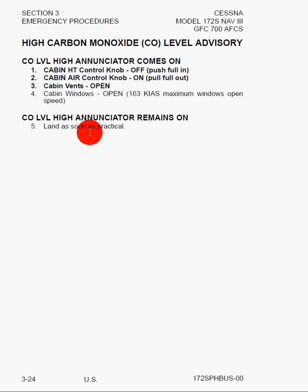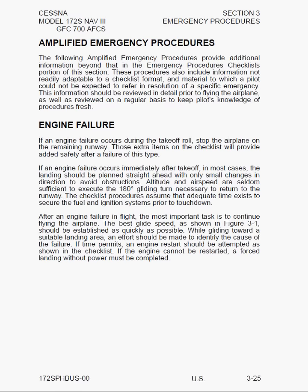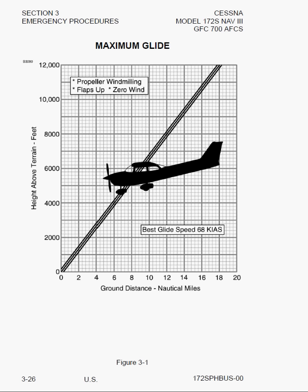Here we have high carbon monoxide levels and amplified emergency procedures for engine failure. Maximum glide speed is 68 knots indicated airspeed — though this is really a best guess at best glide speed. If you transition into flying gliders, you'll realize there isn't a single best glide speed but a whole range of speeds depending on conditions like winds, lift, and sink. This figure assumes best glide for a given weight in still air. Working out the numbers, from 12,000 feet you have about 18 miles, giving a glide ratio of about 9 to 1 — which is pretty poor for the Cessna 172.